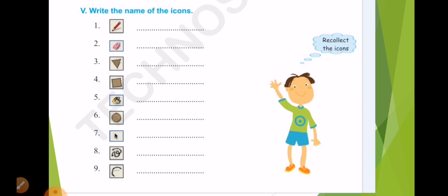Okay, then FIFTH ROMAN, write the name of the ICONS. What is the first ICON name? Yes, a line. Second one, ERASER. Good.